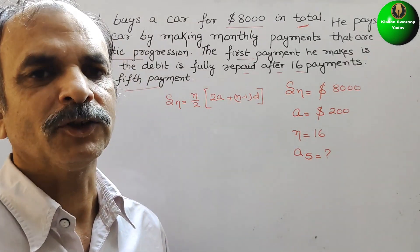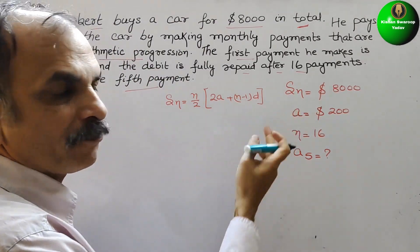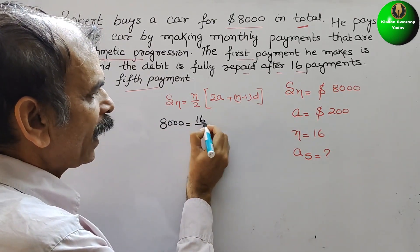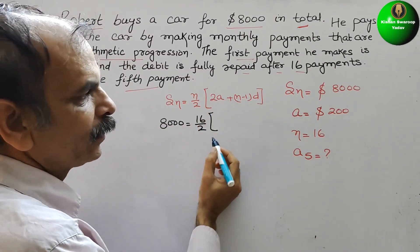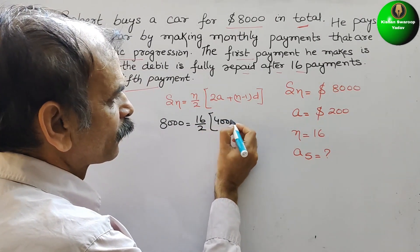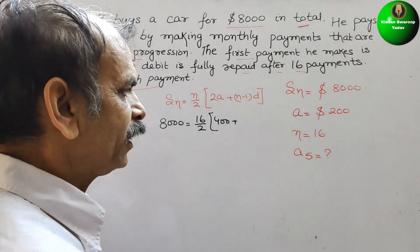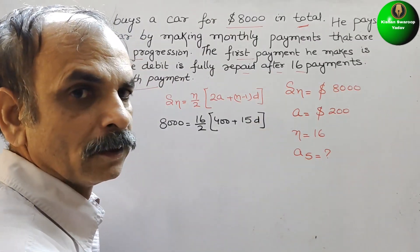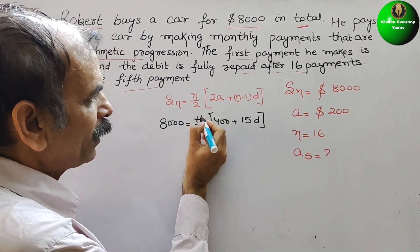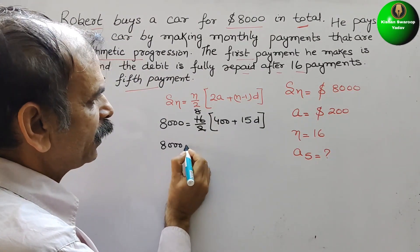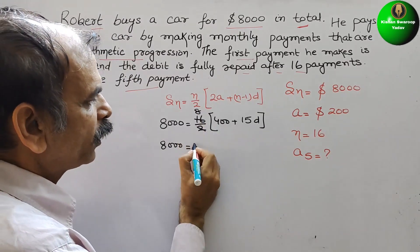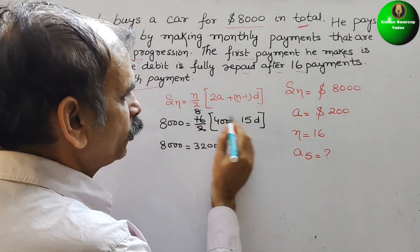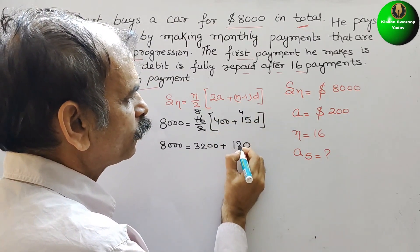Now substitute the values. SN is 8000, equal to N which is 16 by 2, and here 2A: 2 into 200 is 400, plus N minus 1 — 16 minus 1 is 15 — and here comes your D, the difference we are not knowing. So here 16 by 2 gives 8. So here comes 8000 equal to 8 into 400 is 3200, plus 8 into 15D, which is 120D.